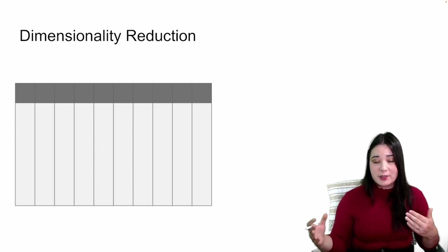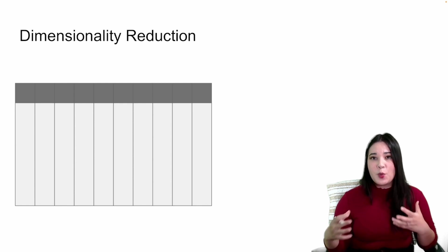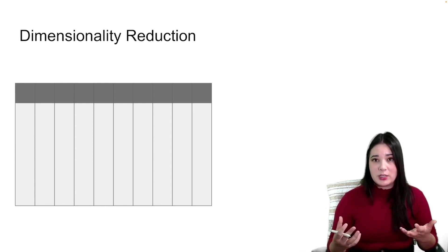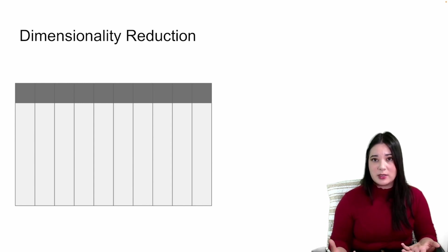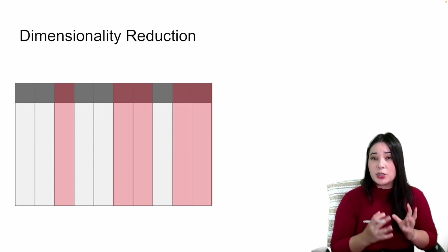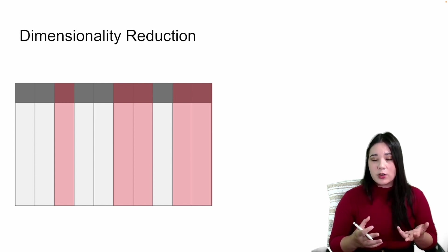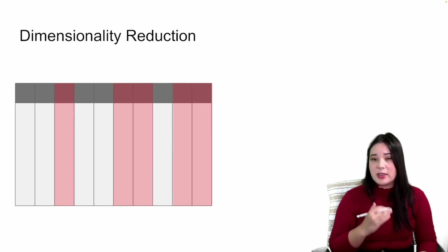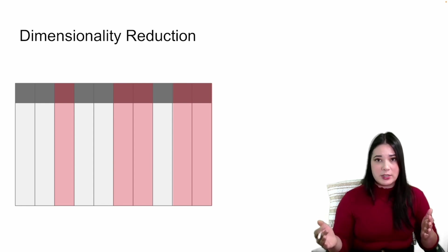The idea behind dimensionality reduction is that often we have a ton of different features in our data and we might not want to use all of them to build our machine learning models, because that will make them computationally expensive. So the idea with dimensionality reduction is that we reduce the number of variables we need to use in order to make our models more efficient.